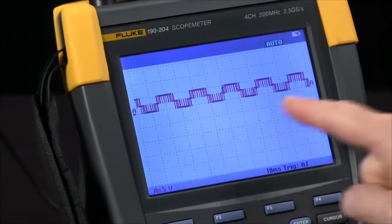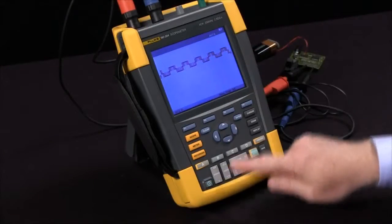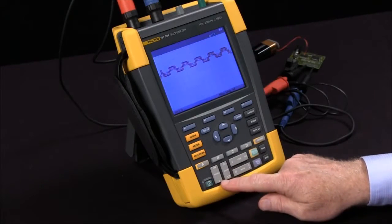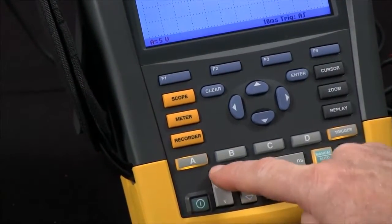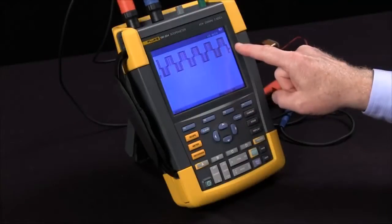I'm going to start off by changing my volts per division for channel A. I've got the rocker switch down here. Right now we're set for five volts per division. Hit the top end of this for millivolts. We change to two. We've got a bigger display.